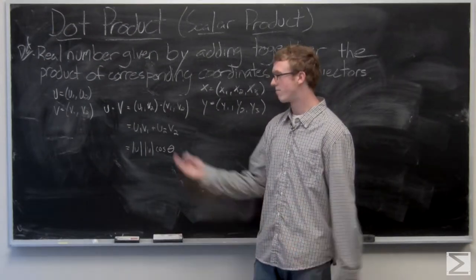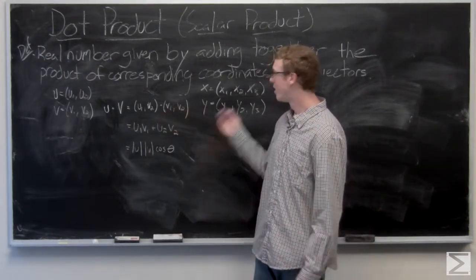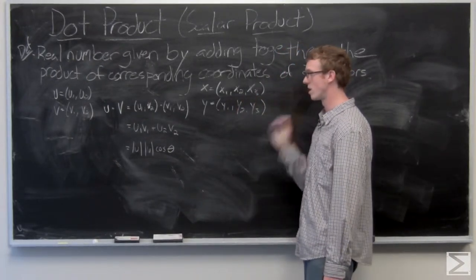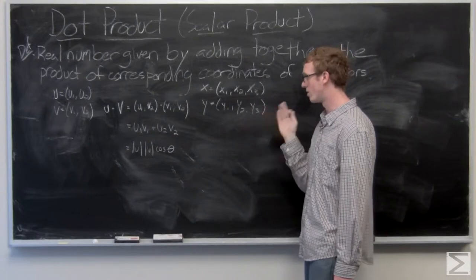So we know that that's the dot product in two space, very similar in three space. We'll take a look with vectors x equals x1, x2, x3, y equals y1, y2, y3.